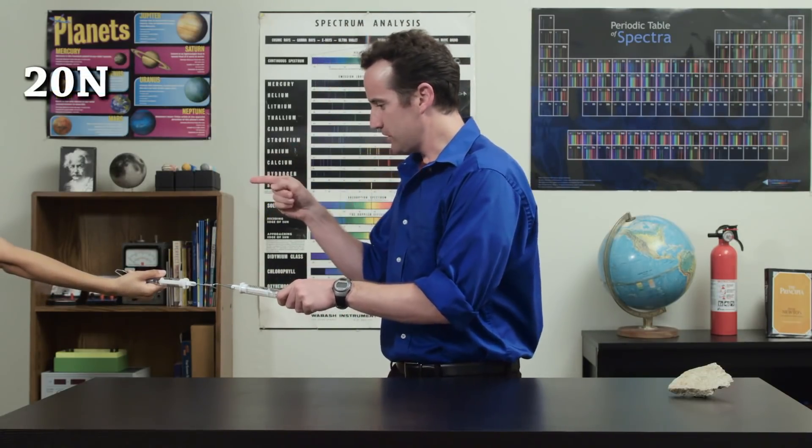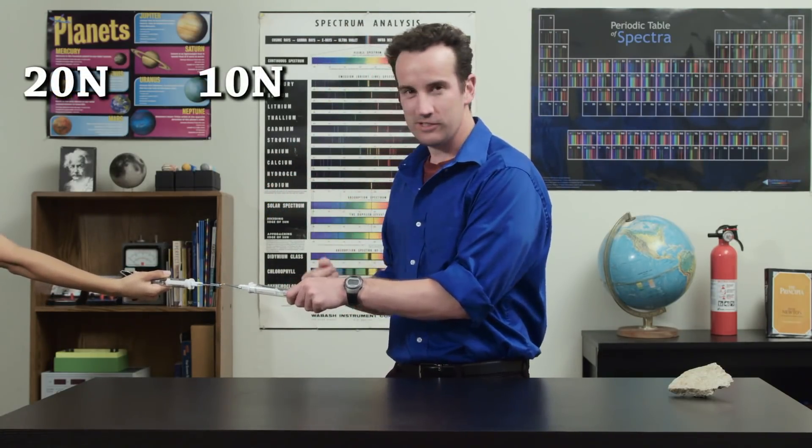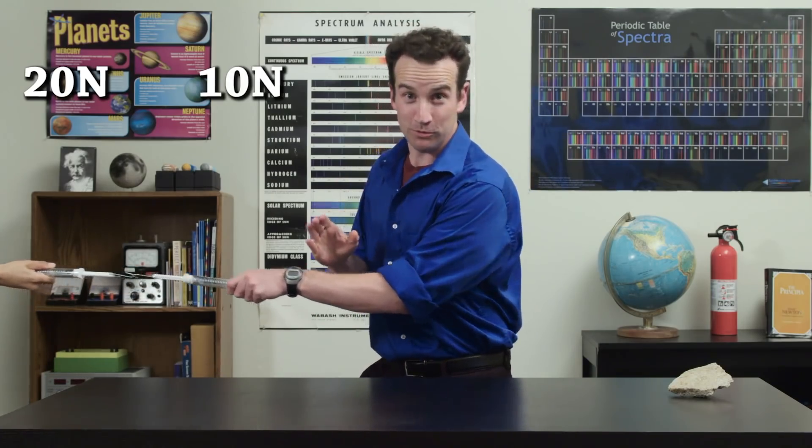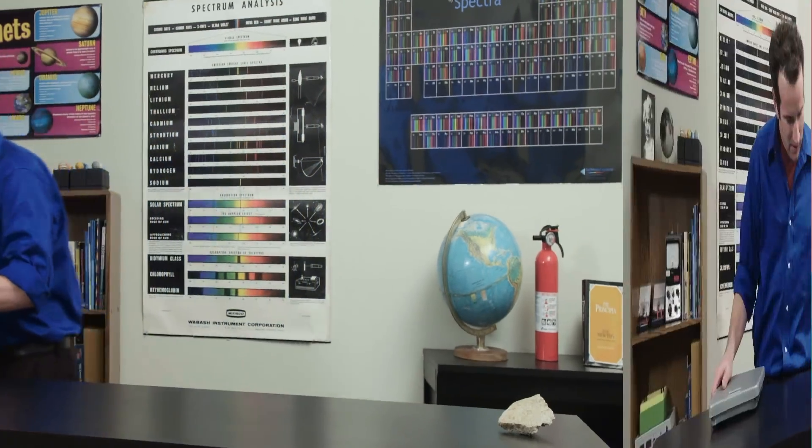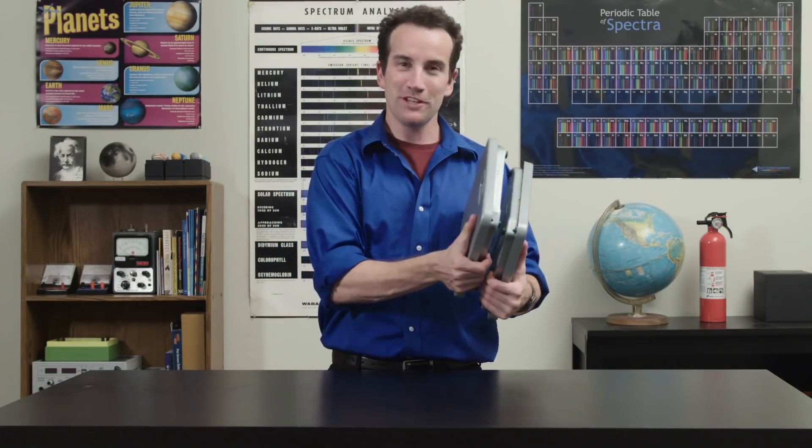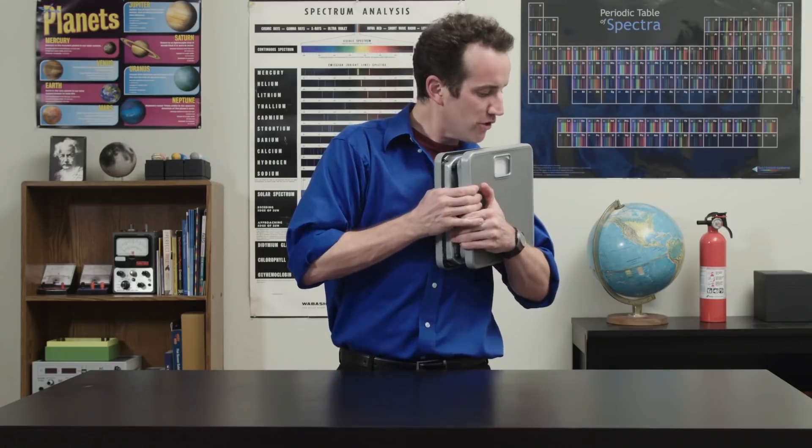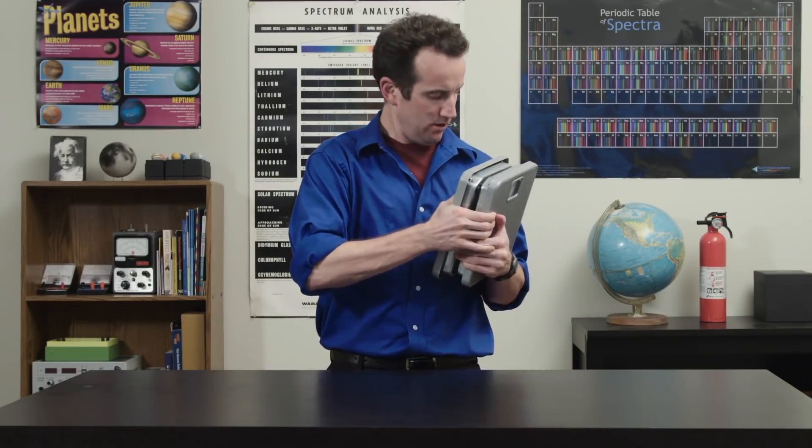And say, you pull with 20 Newtons, I'll pull with 10 Newtons. And this is impossible to do. Check it out. These are scales calibrated in Newtons. You can put them together, and measure that the force is the same on both of them.